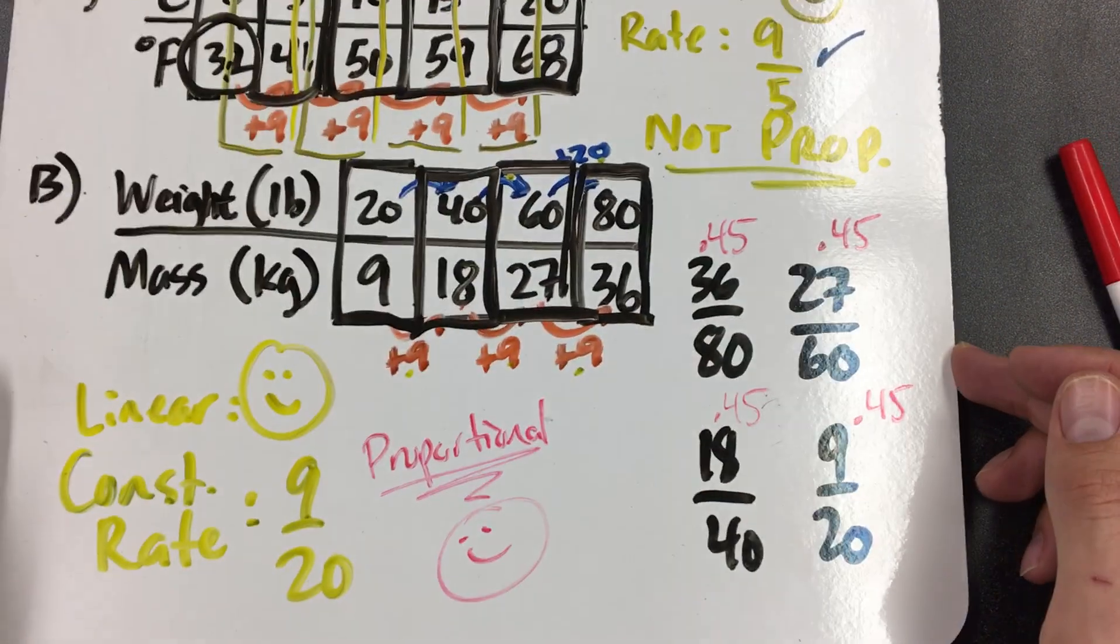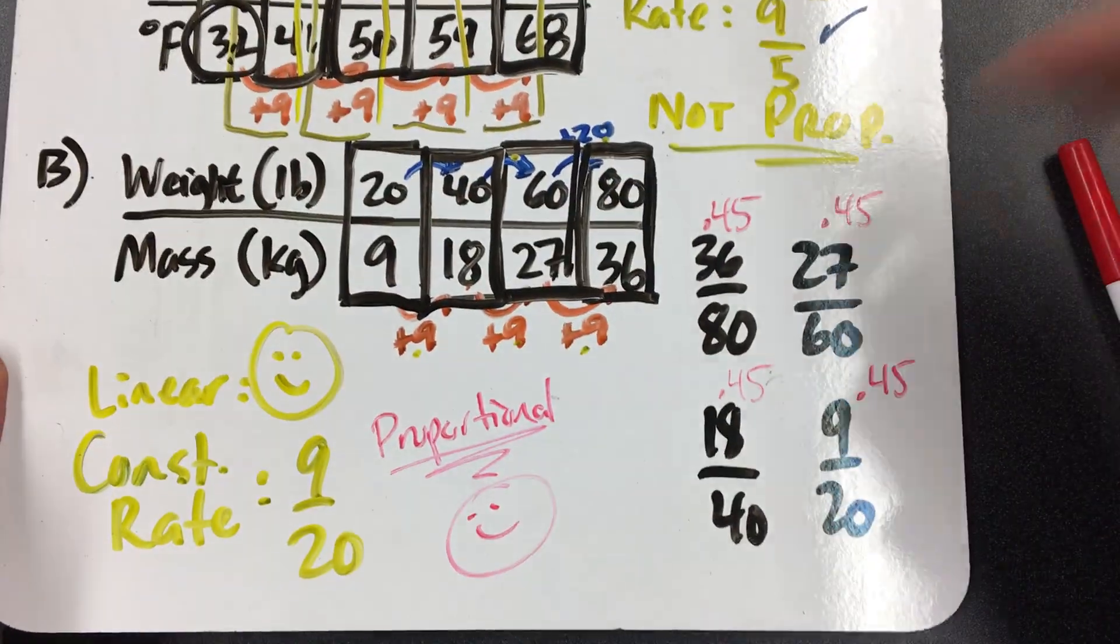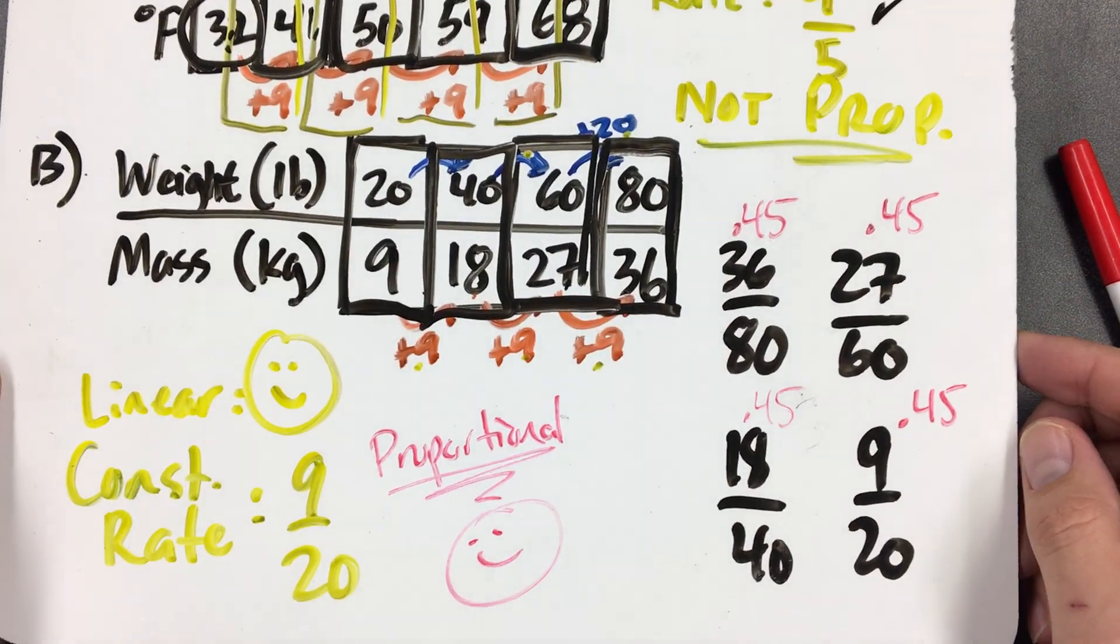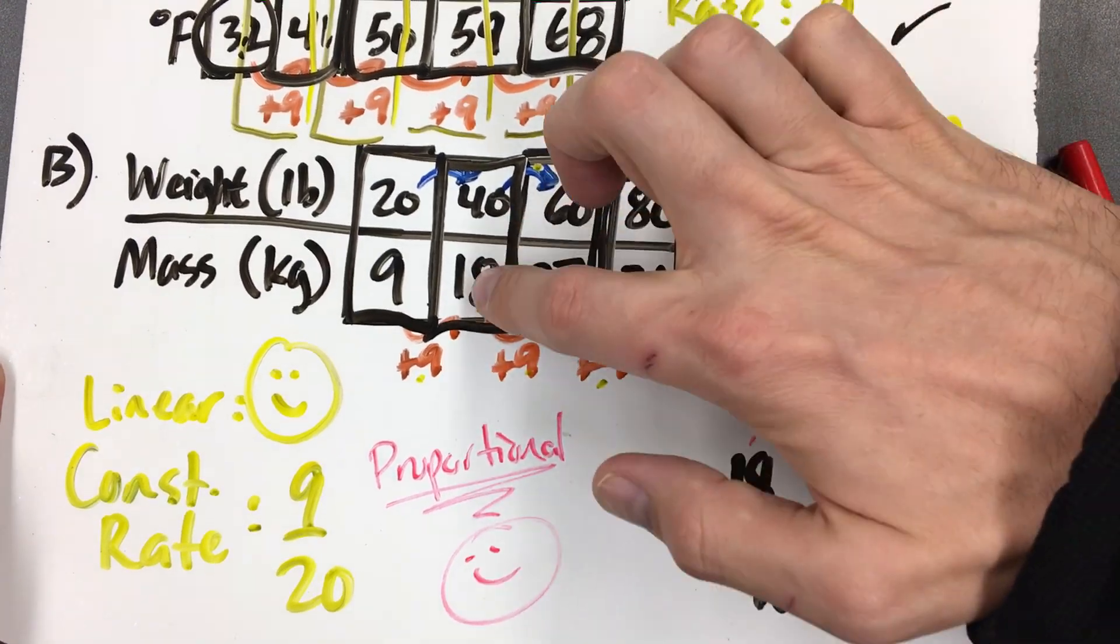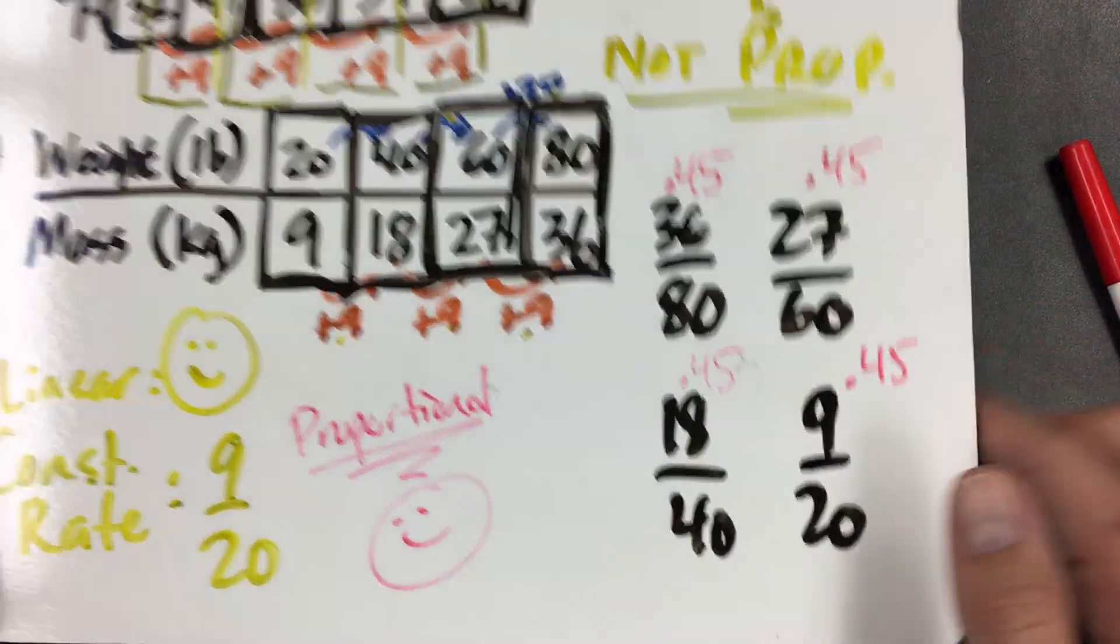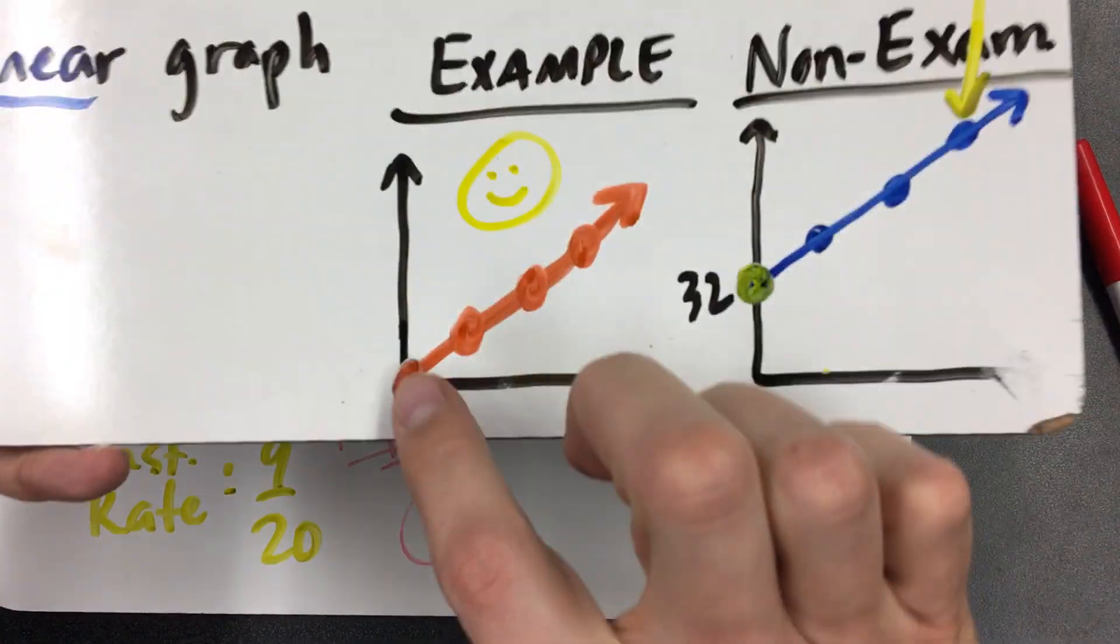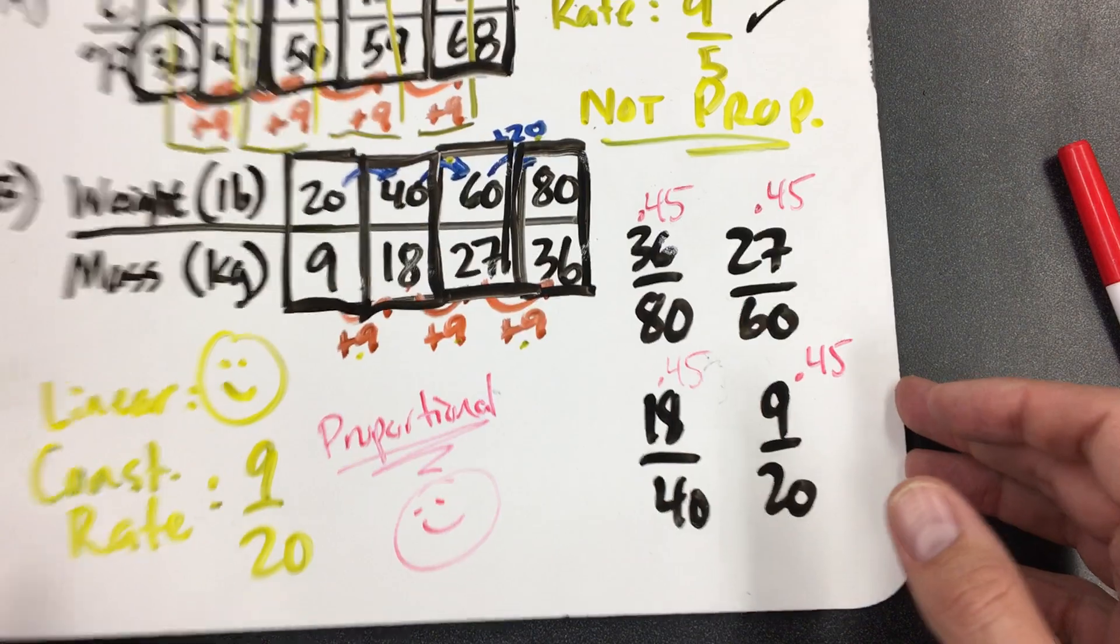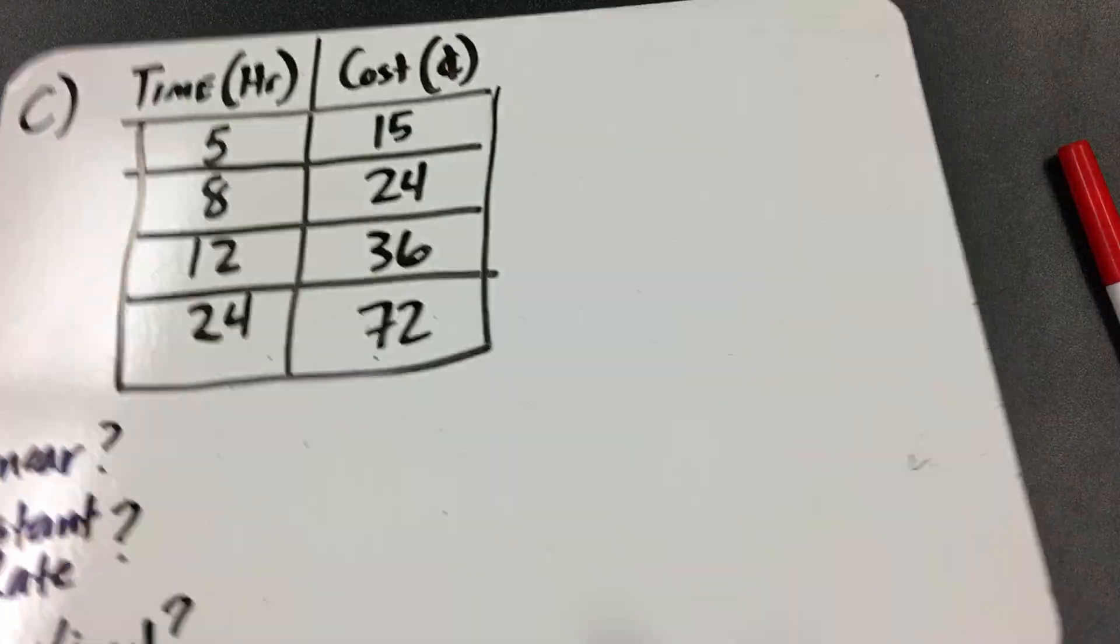Do you see the difference? These were both linear. They both had a constant rate, but the second one was proportional because when you took the actual points, the actual numbers, the actual data they gave you and divided them, we got the same thing all four times. So the second one would be a graph that looks like this that starts at the origin and then goes up. Okay, that's really it today, guys. I'm going to show you just a couple more examples and then we'll get out of here.